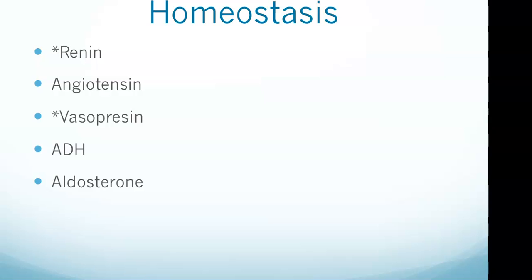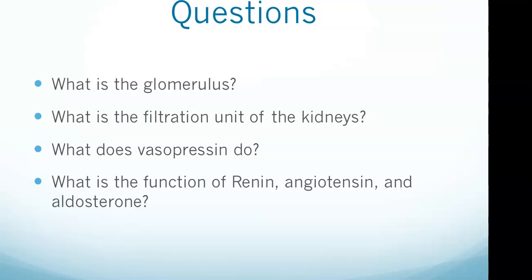Renin, angiotensin, and aldosterone function to increase blood pressure by inducing either vasoconstriction or the reabsorption of sodium at the distal convoluted tubule. The key takeaway is that renin, angiotensin, and aldosterone function to increase blood pressure. That's our video — hopefully you can now answer all four questions. If not, go back through the video to find the answers.